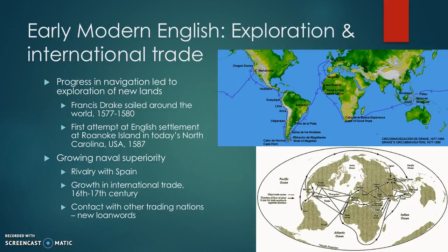The English superiority at sea — with a growing Navy — led to a rivalry with Spain and more international trade. We can see some of the main trade routes on the map at the bottom. This also led to contact with other trading nations: the Dutch, the Portuguese, the Spanish, the Chinese, and so on, and new loanwords entered the English language in this way.